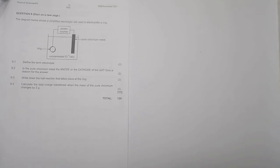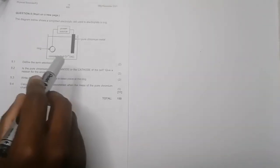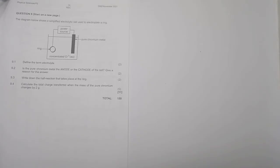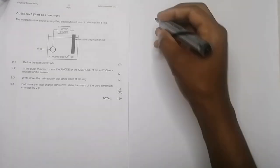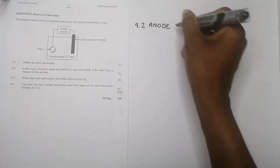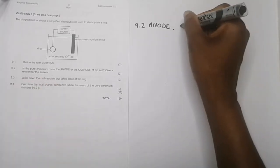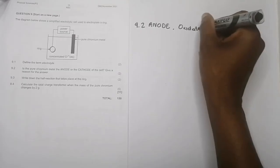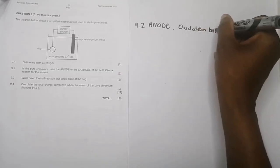Is the pure chromium metal the anode or the cathode of the cell? Give a reason for the answer. We want this to undergo oxidation, the loss of electrons, so that we can get those chromium three plus ions. Oxidation takes place at the anode. Our answer: it is the anode because oxidation takes place there.